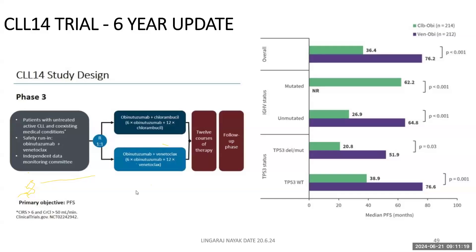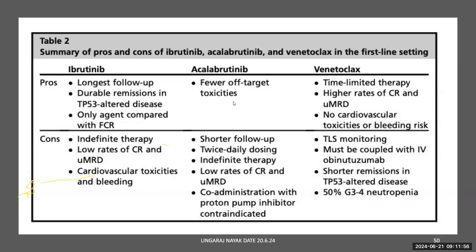The CLL14 trial compared venetoclax plus obinutuzumab — 12 months of time-limited therapy — versus chlorambucil-obinutuzumab. Results clearly favored the venetoclax arm. In the TP53 mutation subgroup, median PFS was 50 months versus 20 months, but BTK inhibitor data looks better than venetoclax in the TP53 group. CLL14 established venetoclax-obinutuzumab as another frontline option.